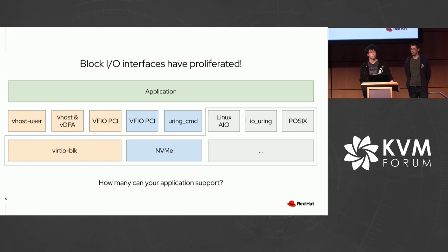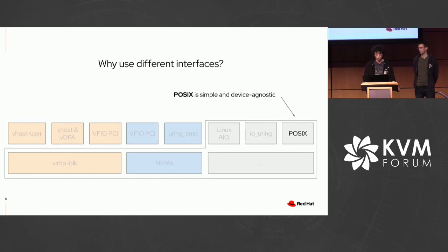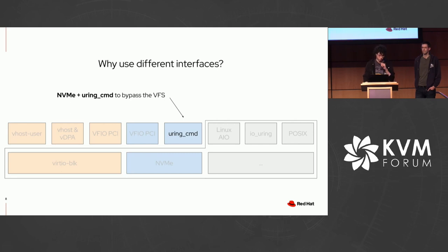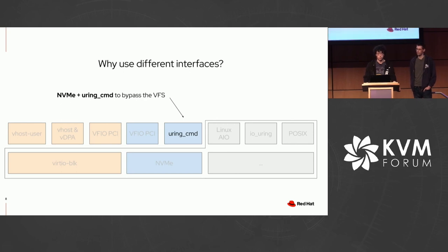Today there are quite a few different block IO interfaces, which are all interfaces to access block devices, but they all differ from each other in certain respects and have different applicability. Plain old POSIX read-and-write system calls are very simple and device-agnostic, and can access a lot of different block devices as long as the kernel supports them. io_uring on Linux is similar but asynchronous, and can achieve less system call overhead. More recently, io_uring also supports io_uring-cmd, which allows submitting NVMe commands more directly to an NVMe device, bypassing the VFS.